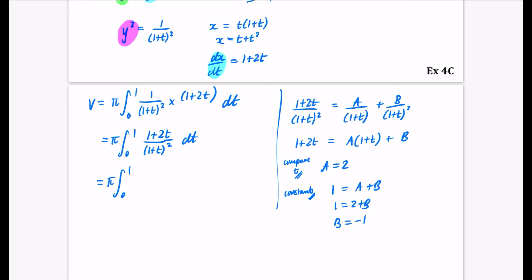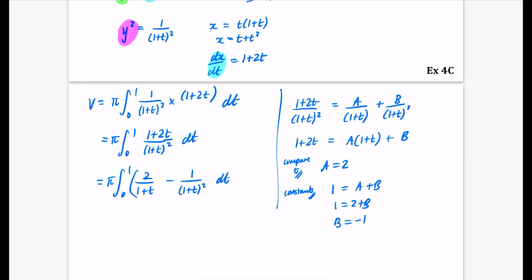So now I can actually do this integration. It's π between 0 and 1. A is 2/(1+t). And B is minus 1/(1+t) squared dt. The first one is going to integrate with an ln. The next one is just going to integrate using reverse chain rule. But I personally like to see it written as 2/(1+t) minus (1+t) to the power of minus 2 dt.